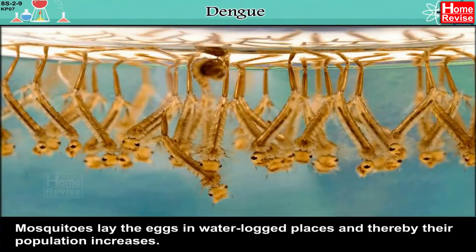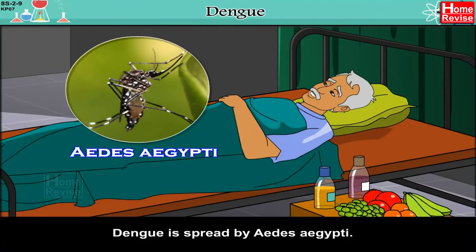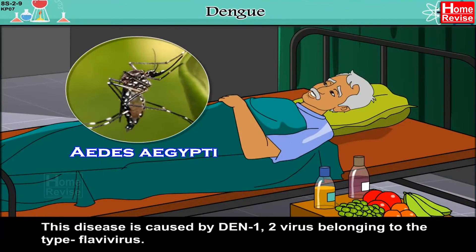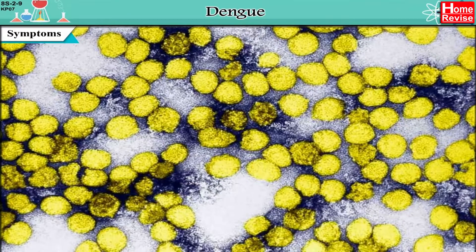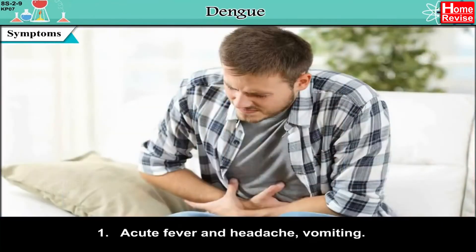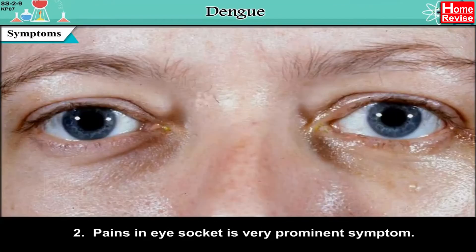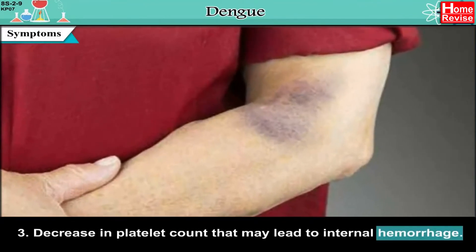Dengue mosquitoes lay their eggs in waterlogged places, thereby increasing their population. Different species of mosquitoes spread different diseases. Dengue is spread by Aedes aegypti. This disease is caused by Den 1/2 virus belonging to the Flavivirus type. Symptoms include: one, acute fever and headache with vomiting; two, pain in the eye socket, which is a very prominent symptom.